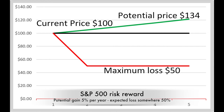We have a situation where the potential gain is 5% per year, while the potential loss — if a recession comes in the next 3 to 5 years — is at least 50%. The maximum loss is around 50%, while the potential price increase is only 34%. This is a negative asymmetrical risk situation coming from stocks.